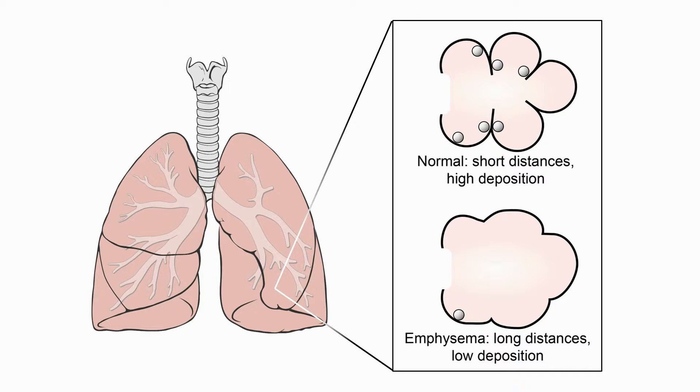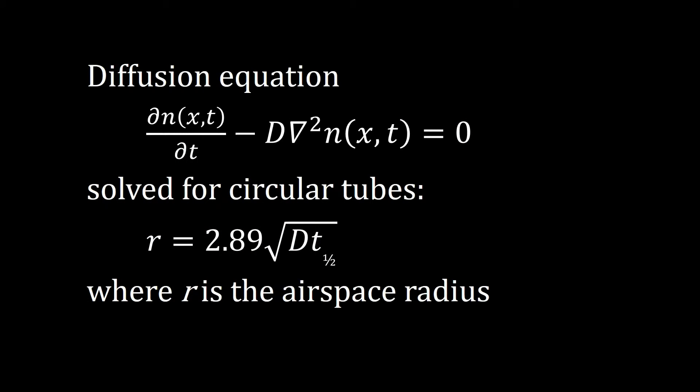Airborne nanoparticles move in the air by diffusion, similar to gas molecules. By solving the diffusion equation for nanoparticles in circular tubes, we obtain a simple relationship between airspace radius r and the half-life time of nanoparticles in the lungs. Here, D is the diffusion constant, which depends on the particle size.